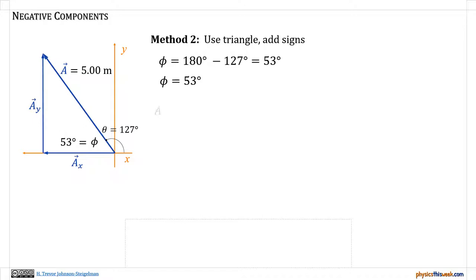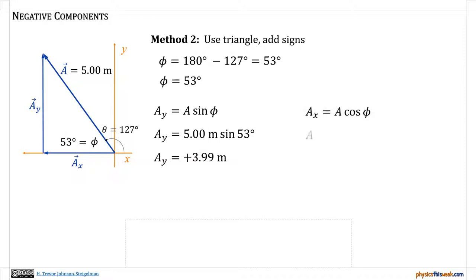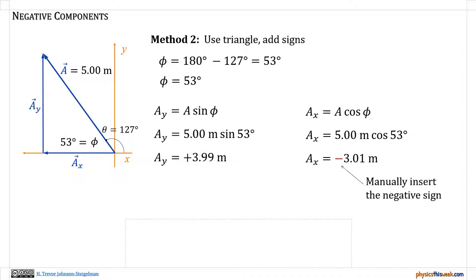Using that angle phi: a-y equals a sine phi, so a-y equals 5.0 meters times sine 53°, giving a-y equals positive 3.99 meters — just like before. For the x component: a-x equals a cosine phi, so a-x equals 5.0 meters times cosine 53°, giving a-x equals 3.01 meters, but I've manually inserted a negative sign because I know that a-x points in the negative x direction. That manual insertion is the final step — my calculator doesn't tell me that.